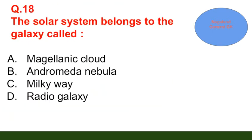Question number 18: The solar system belongs to the galaxy called — option A: Magellanic Cloud; option B: Andromeda Nebula; option C: Milky Way; option D: Radio Galaxy. The correct answer is option C — Milky Way.